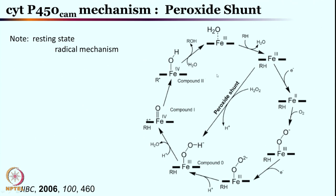We have also seen the catalase activity and peroxidase activity. If this pathway is not forming, or if oxygen is missing or electron transfer is insufficient, in the presence of hydrogen peroxide as an active species we can utilize the iron 3 species to shuttle between iron 3 and iron 3 hydroperoxo. This is known as peroxide shunt — and this is the mechanism for peroxidases. The peroxidase chemistry essentially involves formation of the iron 3 hydroperoxo species starting from the iron 3 aqua complex.